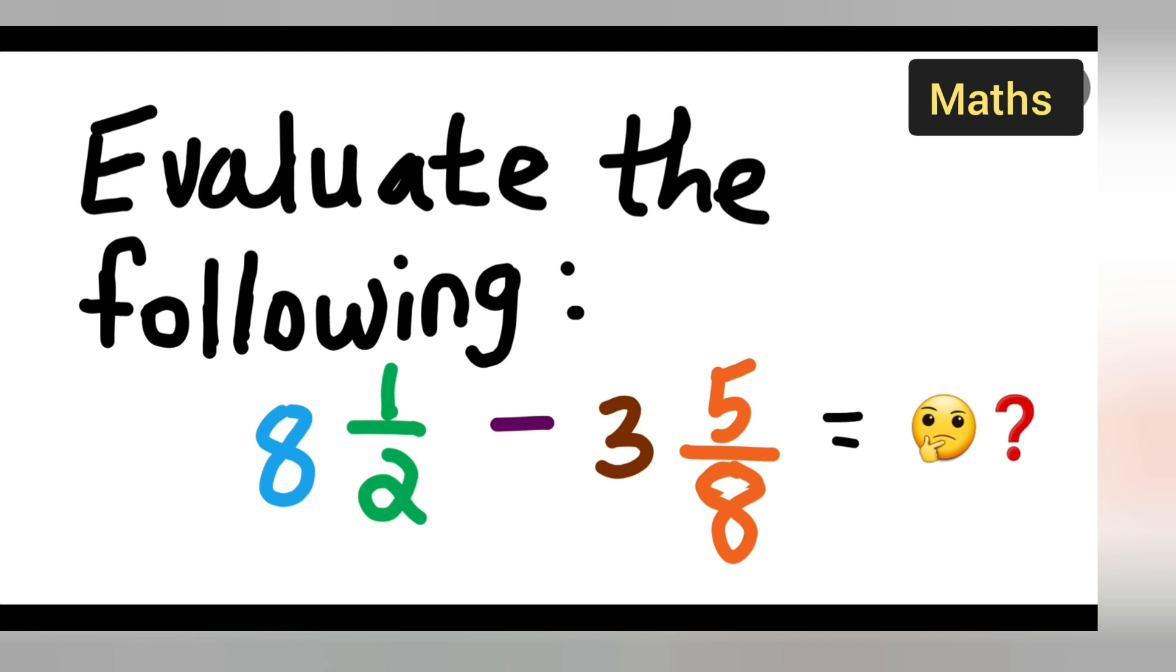The problem is 8 1/2, which is a mixed fraction, minus 3 5/8, also a mixed fraction. You have to subtract two mixed fractions. Now, how to do this? Let us see.